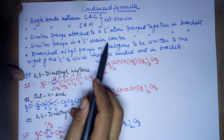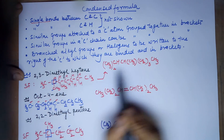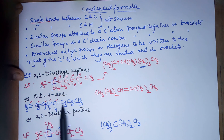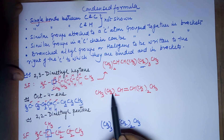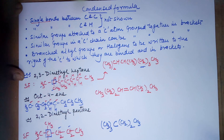Similar groups in a carbon chain can be grouped together. In a carbon chain you have CH2, CH2, CH2 — that is why you have (CH2)3. In this particular chain you have two CH2s together, so (CH2)2. Similarly on the other side, two CH2s can be grouped as (CH2)2. This is the general way of writing down the condensed formula. Thank you — please like the video if you liked it.